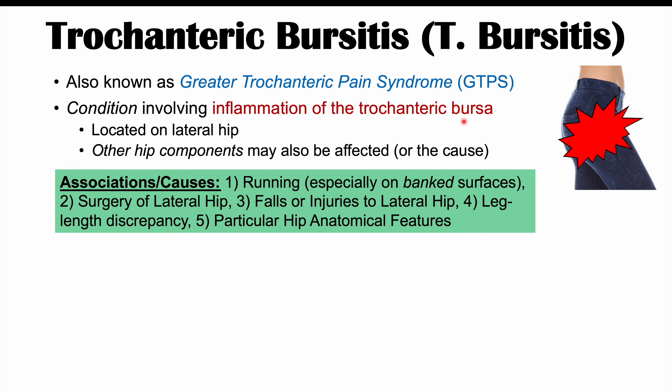Some associations and causes of trochanteric bursitis include running, especially on banked surfaces — if one leg is running on a lower surface than the other over a consistent period of time. We can also see this condition more likely to occur after surgery on the lateral hip, after falls or injuries to the lateral hip, and with leg length discrepancy, where one leg is longer or shorter than the other. This ties in with running on banked surfaces and that discrepancy in leg length usage.